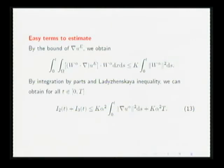First, it's easy to get the mixed term bounded like this. By integration by parts three times and using this inequality, we can obtain i2 plus i3 bounded by 13.